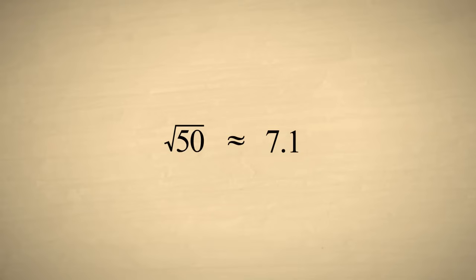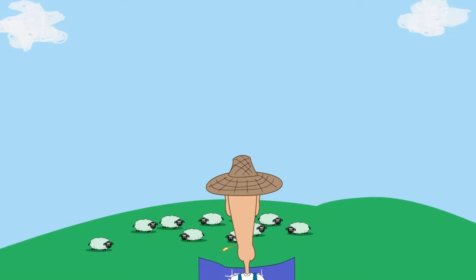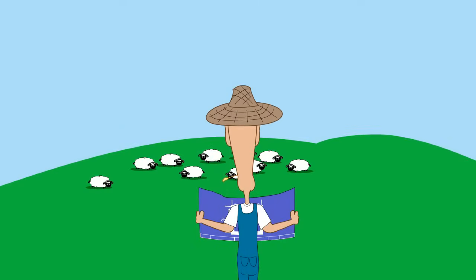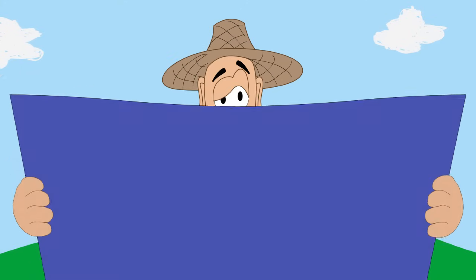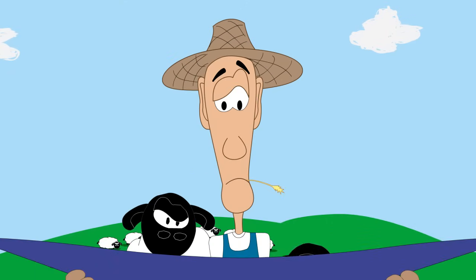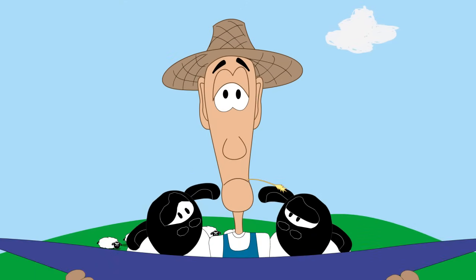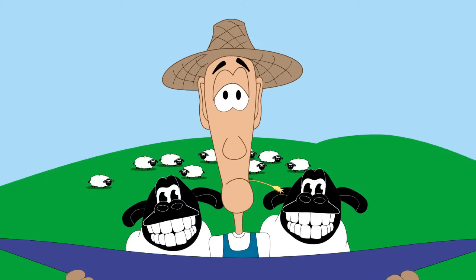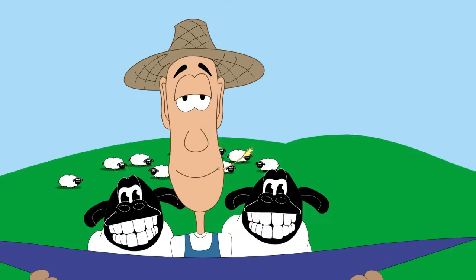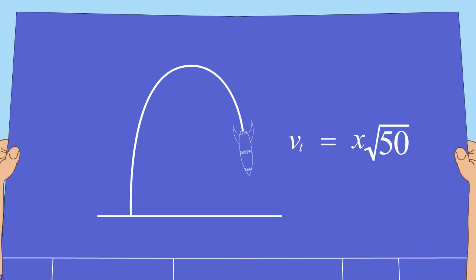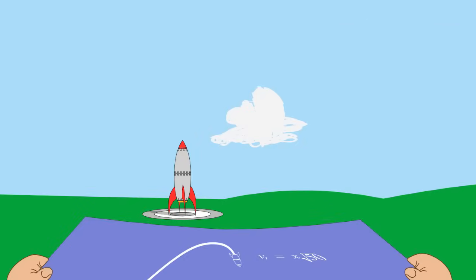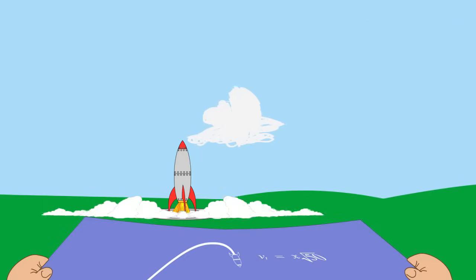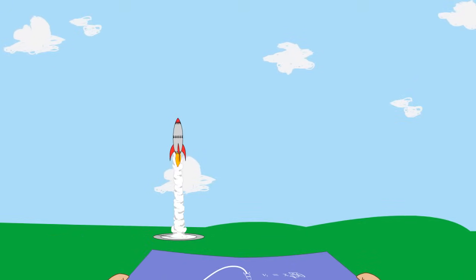Which form is considered simpler might depend upon its use. A farmer who needs to build a square pen to enclose 50 square feet of space would probably not use radical expressions to specify the dimensions — numbers are a much simpler way. On the other hand, an engineer or scientist might prefer the radical expression since it is not only compact, but represents the exact value of the root without any rounding error.